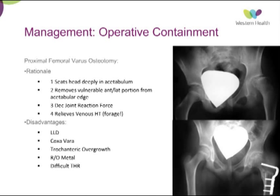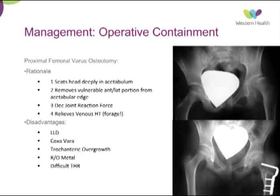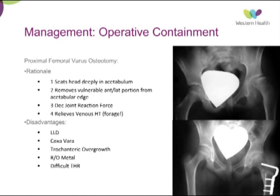One of the other theories is that by cutting the bone with the osteotomy, you are essentially relieving the venous hypertension, similar to a core decompression procedure in AVN. Disadvantages include leg length discrepancy, greater trochanteric overgrowth, the need for metal removal, and difficulty with total hip replacement later on.